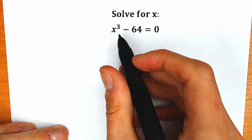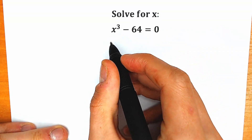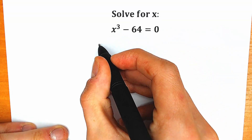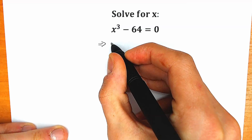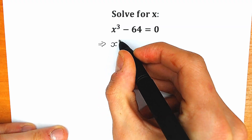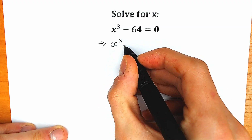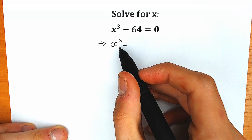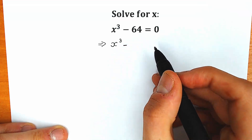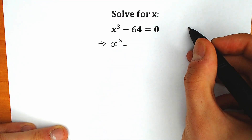So how can I solve this question? First of all, let's rewrite x-cube in the new line — so we have x-cube right here. The next thing we have minus, but instead of 64, let's try to express it as a cube. Let's see if it's possible or not.